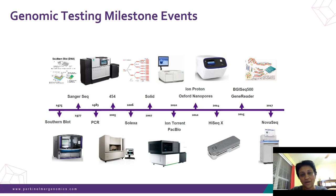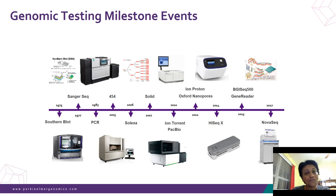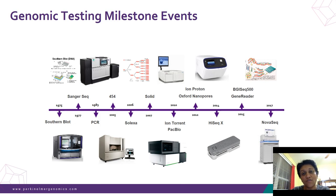Before we get into a clinical report itself, it's really important to spend a few minutes on background information. Genomic testing has several milestones. Starting with 1975, southern blot was used to identify chromosomal regions, followed by radioactive labeling for sequencing, then fluorescent Sanger sequencing, and then the advent of next-generation sequencing — the SOLiD instrument, Illumina, Oxford Nanopore, and most recently NovaSeq.